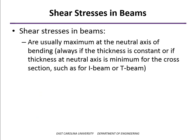Usually the maximum value of shear stress occurs at the neutral axis. That's always the case if the thickness at the neutral axis is as small as it is anywhere else in the beam. When we have a rectangular cross section, an I-beam, or a T-beam, then the maximum shear stress is going to occur at the neutral axis. If the thickness varies, then that may not be the case.